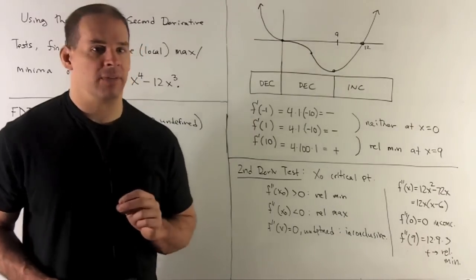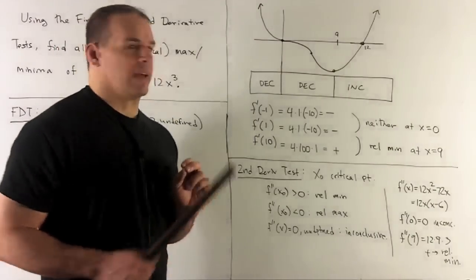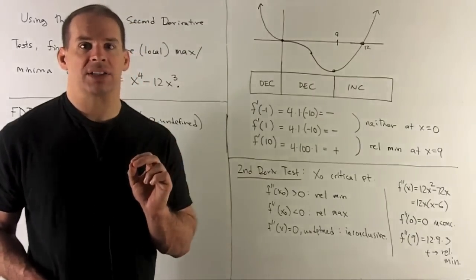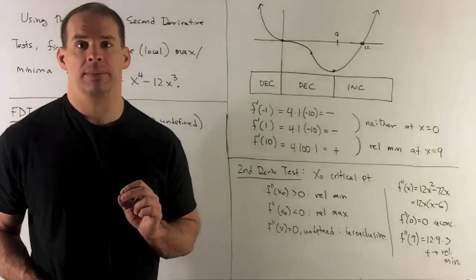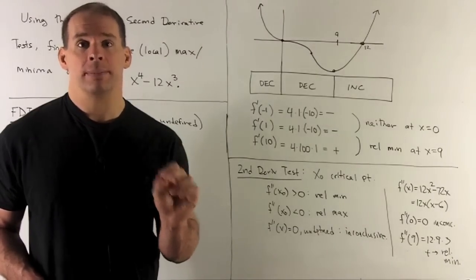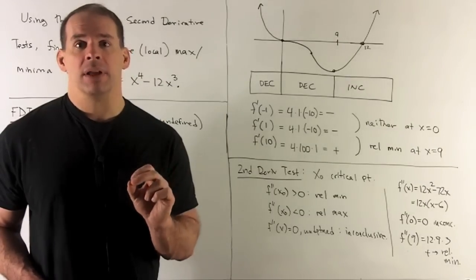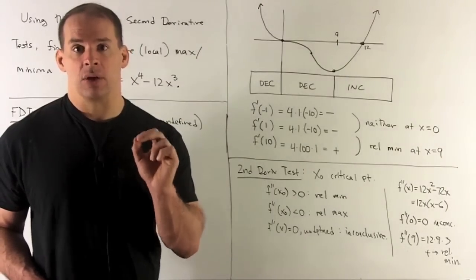Take our second derivative, what do we get? We're going to get 12x^2 - 72x. The factor out of 12x leaves me with x - 6. If I put 0 in there, it's our first critical point, we get a 0 out, so the second derivative test is inconclusive.